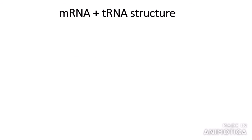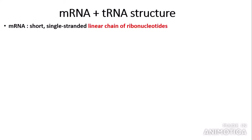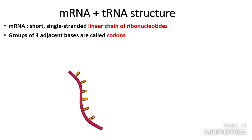Before we delve deeper into these processes, here's some information about mRNA and tRNA structure. mRNA stands for messenger ribonucleic acid. mRNA is a short, single-stranded linear chain of ribonucleotides — ribonucleotides meaning there is a ribose rather than a deoxyribose in the nucleotide. A key point: groups of three adjacent bases of mRNA are called codons, which encode a specific amino acid.